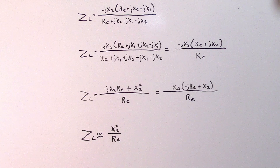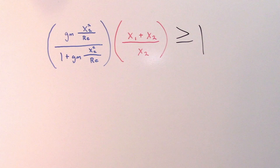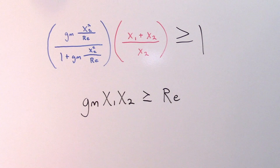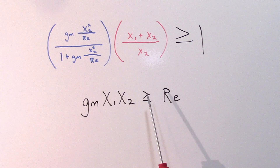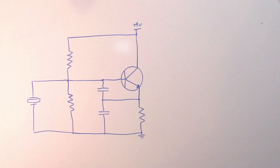We need zero phase shift and a total loop gain greater than one. With some algebraic manipulation of the full loop gain equation, you can show that the product of transconductance GM, C1 impedance X1, and C2 impedance X2 must be greater than or equal to the resistive losses RE in the crystal. This is the key criterion: GM × X1 × X2 ≥ RE. It's a very useful and easy check to ensure you have sufficient loop gain to overcome crystal losses and sustain oscillation.